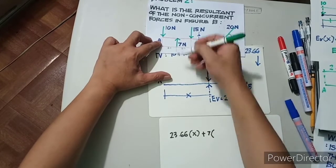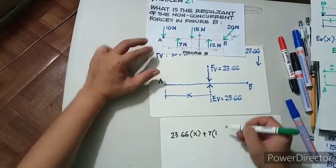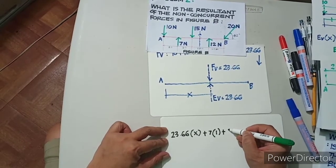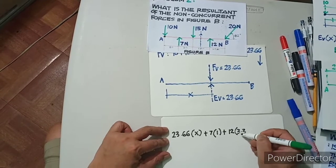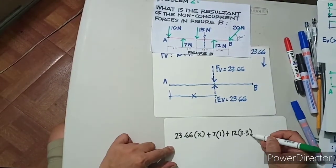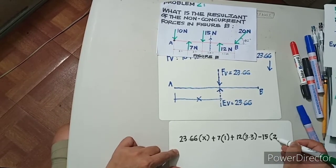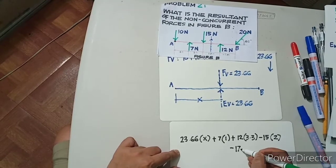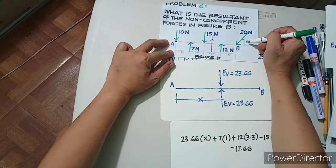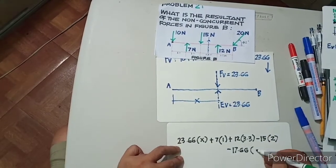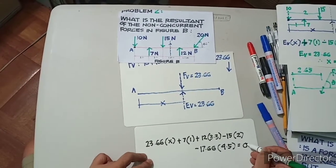Plus 7 multiplied by a distance of 1. Remember, we are taking the moments at point A. Plus 12 multiplied by 3.3 — the distance from this point to that point is 3.3. Minus 15 multiplied by 2. Minus 17.66 — that's the vertical component of 20. 20 sin 62 is 17.66, multiplied by 4.5. This is all equivalent to zero because it is in equilibrium.